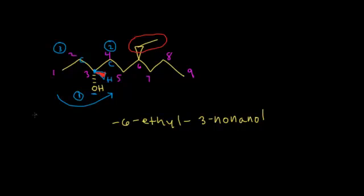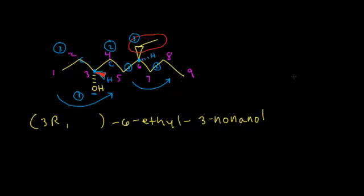At carbon 6, there are four different substituents and a hydrogen going away from us. The chain on the left has the most carbons and an oxygen, so it gets highest priority 1; the right chain gets priority 3. Going 1→2→3 is counterclockwise, and the lowest-priority hydrogen is going away from us — so this is S. The full IUPAC name with stereochemistry is (3R,6S)-6-ethyl-3-nonanol. If that was too fast, go back and watch the earlier videos on absolute configurations.